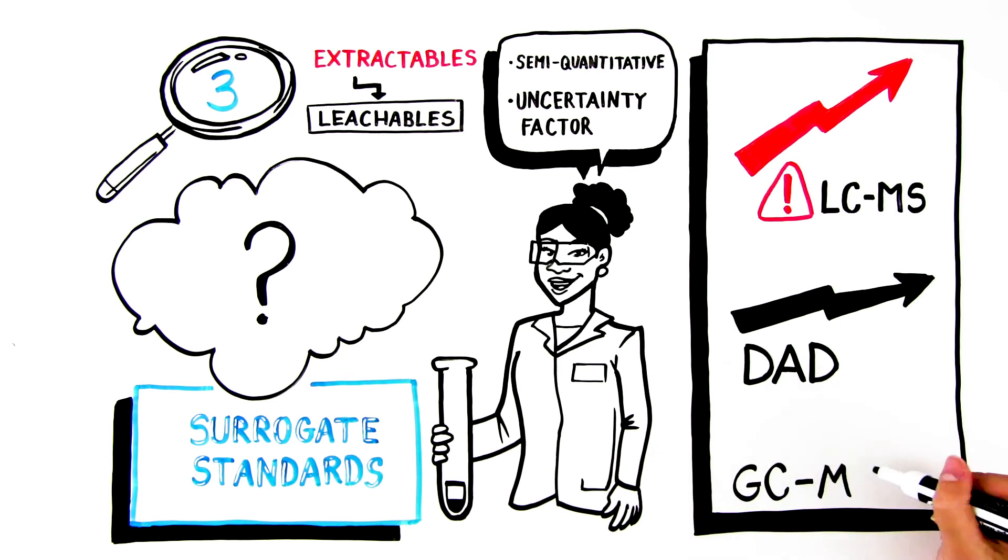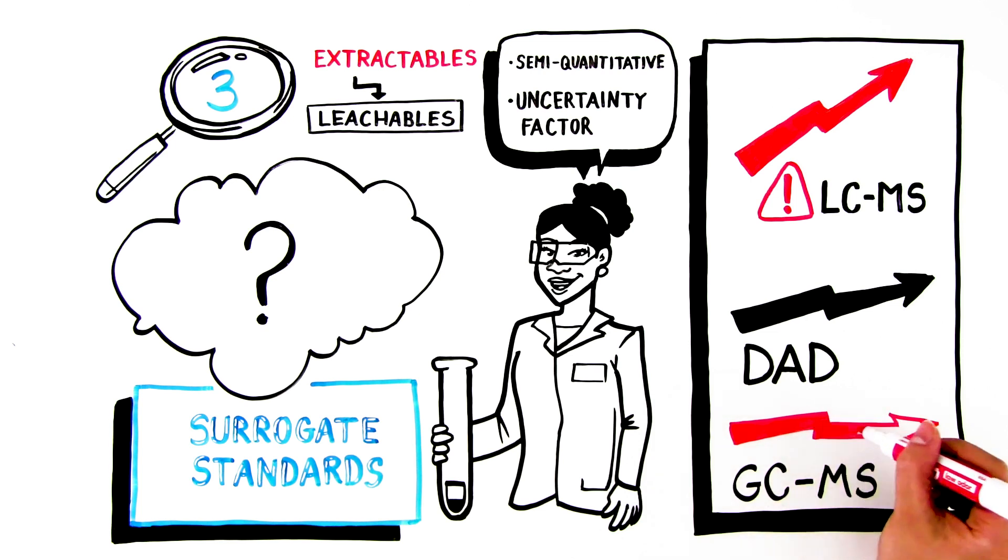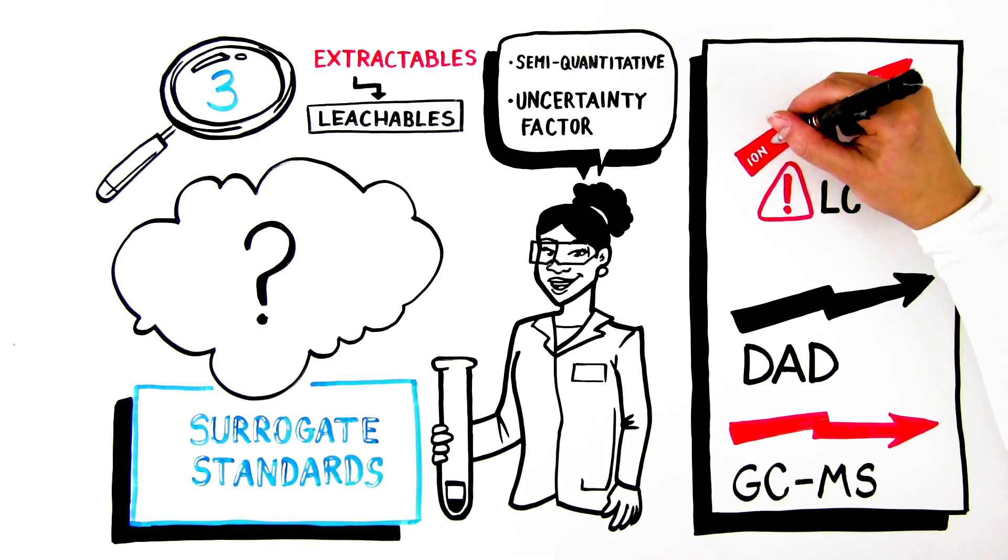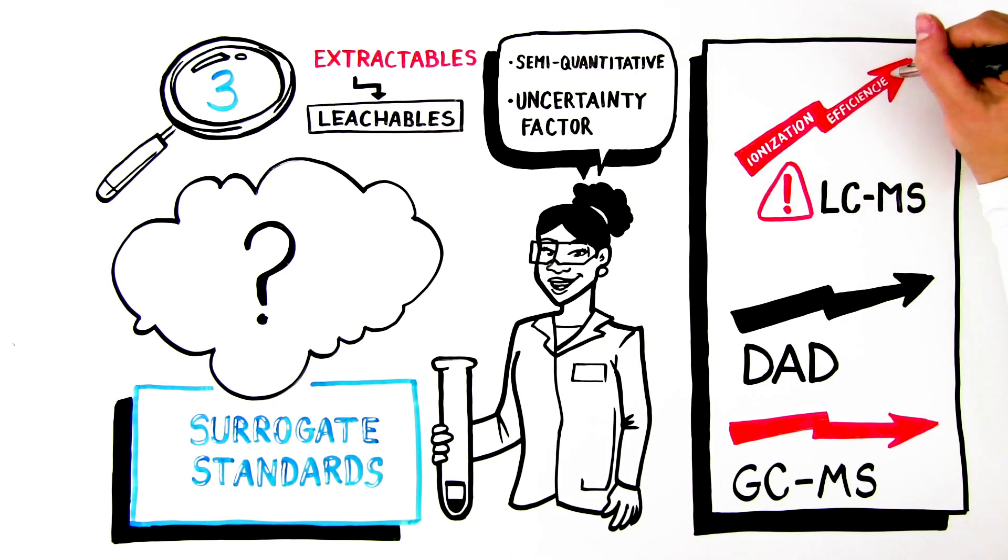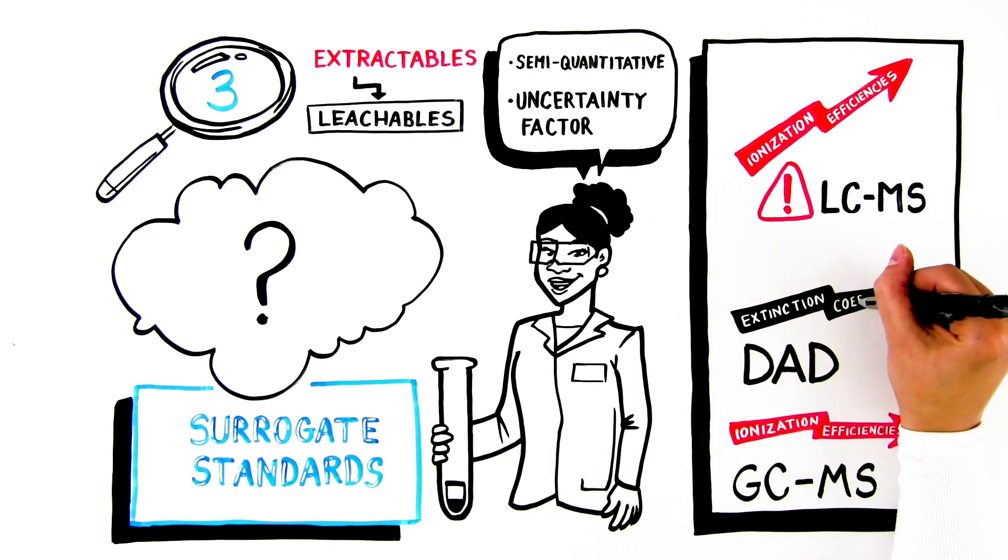which is used for the analysis of semi-volatiles to non-volatiles. Gas chromatography mass spectrometry (GC-MS), used for volatile to semi-volatile analysis, typically shows lower response variability than LC-MS. The variability stems from the fact that compounds have different ionization efficiencies, or in the case of DAD, extinction coefficients.